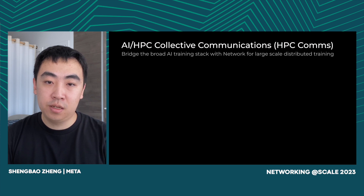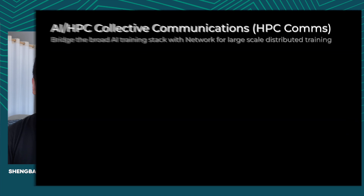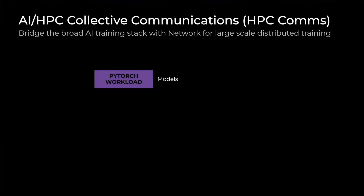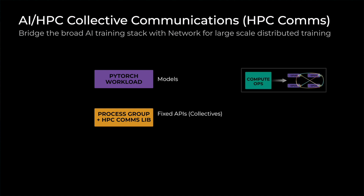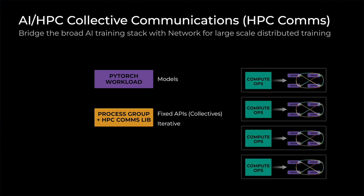AI HPC collective communications, also known as HPC comms, bridges the broad AI training stack with network for large-scale distributed training. A common architecture of a training stack, from top to bottom, includes PyTorch workflows which implement various models, and under it are process groups and HPC comms libraries like NCCL. Training workflows based on HPC comms have two main characteristics: first, the communication between GPUs following compute operations uses fixed APIs known as collectives like AllReduce; second, they are iterative, meaning a training workflow repeats its iteration many times until the end.